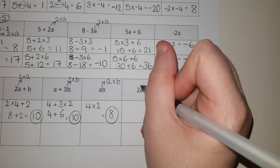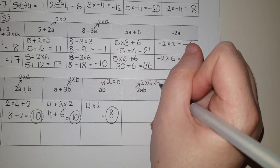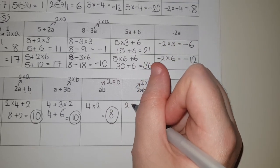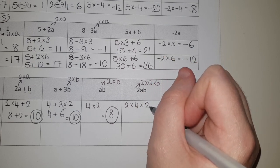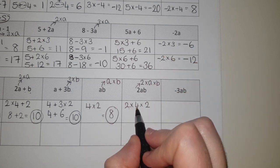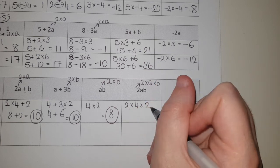Okay, now 2AB. That means what we're actually doing is two times A times B. So I've got two multiplied by - A is four - multiplied by - B is two. So I've got two multiplied by four is eight, then I multiply that by two again. So eight times two is 16.